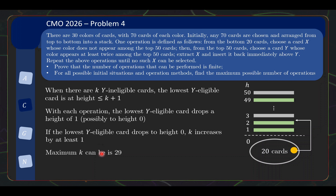Fourth observation: the maximum number of Y-ineligible cards in the top 50 is 29. Since there are only 30 colors, you cannot have all 30 as ineligible — there would be no color left for the remaining cards.